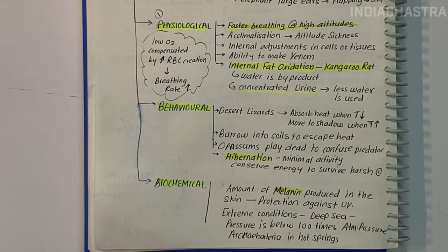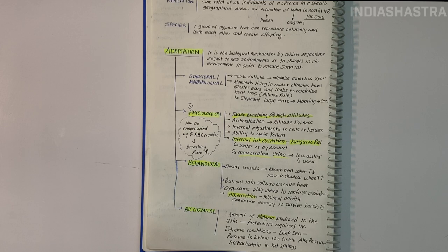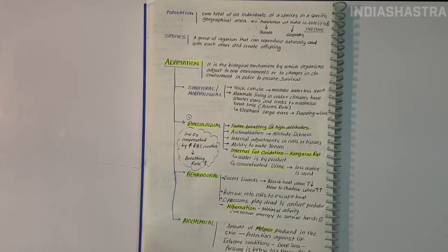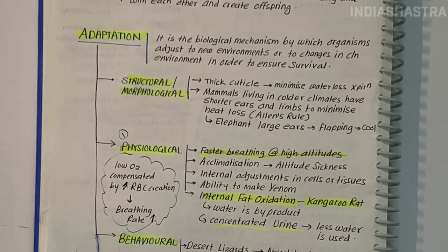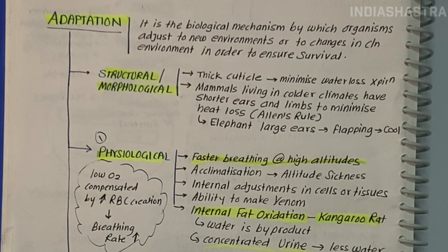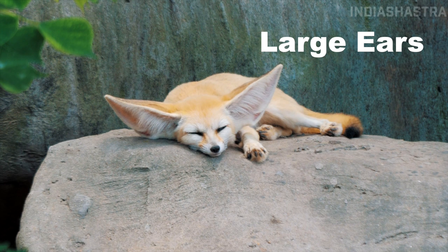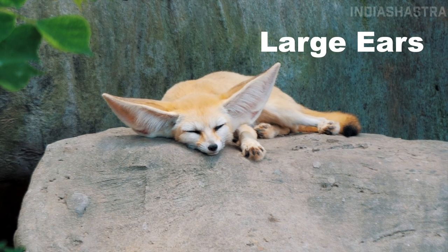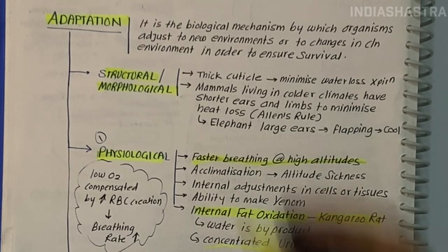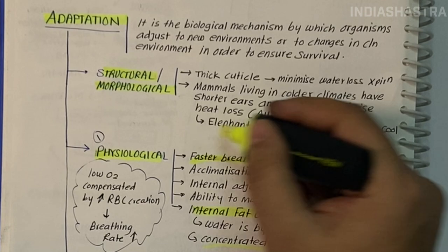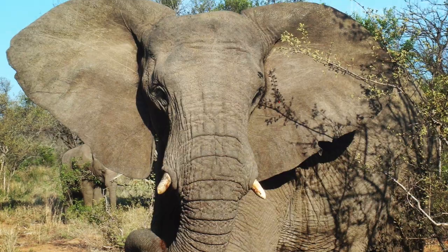Second, behavioral adaptations — changes in normal behavior to cope with a situation. Examples include bears hibernating and birds migrating. Third, biochemical adaptations — melanin acts as a protective biological shield against ultraviolet radiation, preventing sunburn damage that could result in DNA changes and malignant skin cancers. Fourth, morphological adaptations — a structural change giving an organism a greater chance of survival. For example, the fennec fox in the desert has large ears to radiate body heat. Tropical elephants also have large ears, whereas polar bears have small ears.